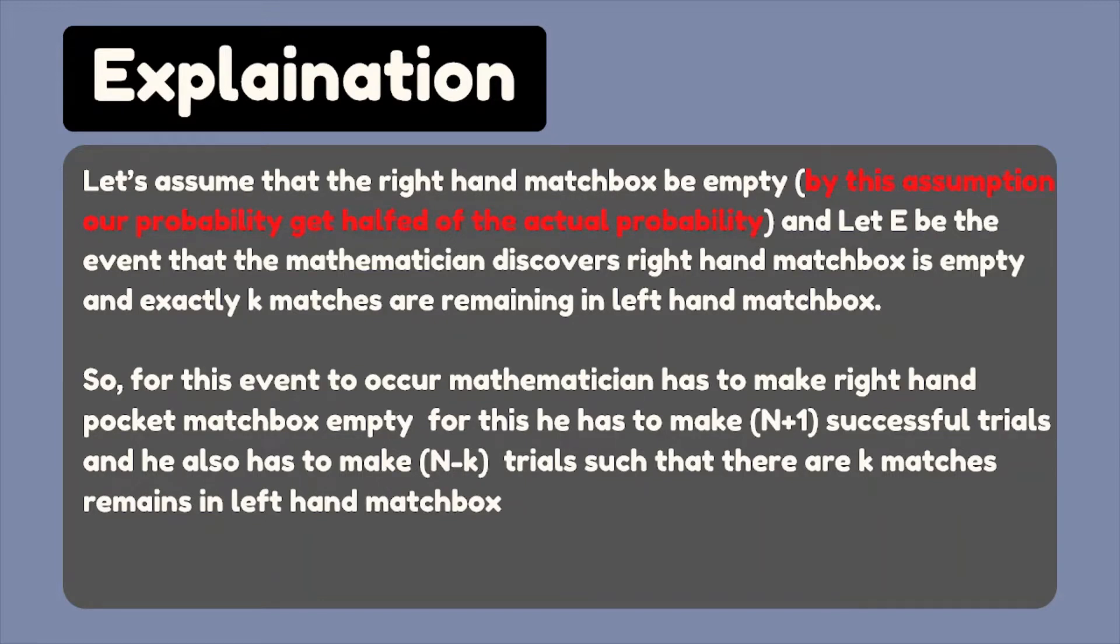So for this event to occur, mathematician has to make right hand pocket matchbox empty. For this, he has to make N plus 1 successful trials and he has to make N minus k trials such that there are k matches remains in left hand matchbox.